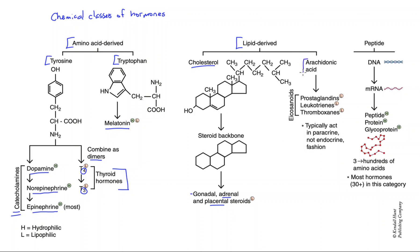Another membrane lipid used to produce chemical messengers would be arachidonic acid. It's a fatty acid that can be converted into the eicosanoids. This is a very complex pathway, leading to the production of a very large number of molecules. These are largely autocrine and paracrine, so we won't put them into the classic endocrine function, but they're very involved in things like blood clotting and inflammation, which are obviously very important physiologically.